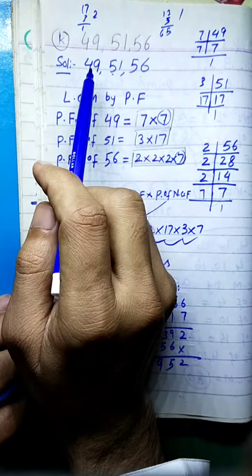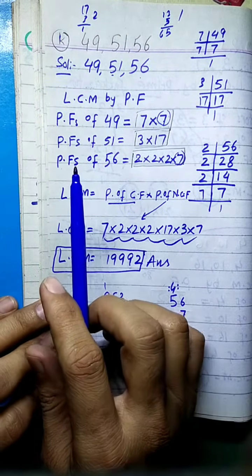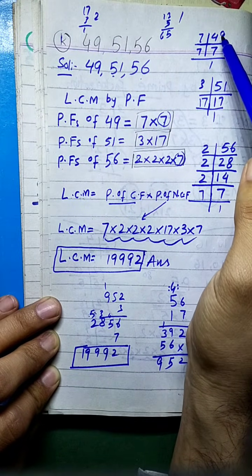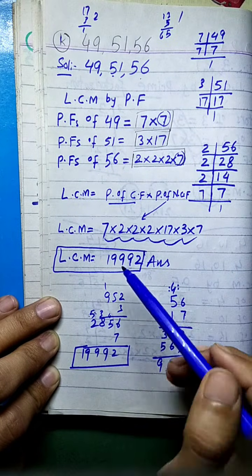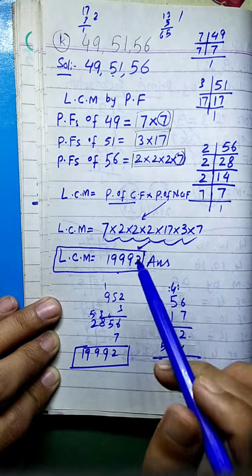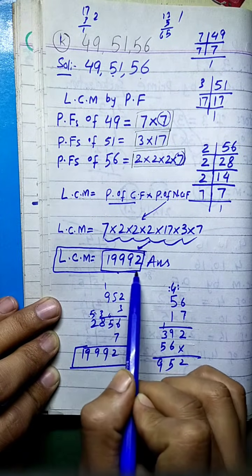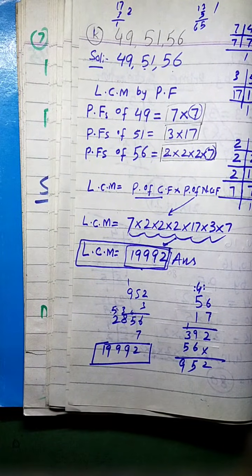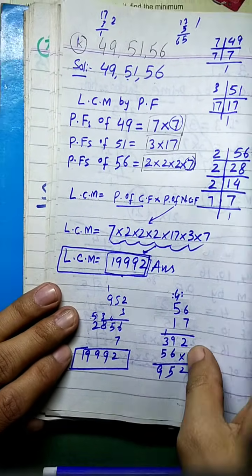Listing the multiples of 49, 51, and 56 to find the least common multiple. This confirms the LCM found by prime factorization. That completes the LCM by prime factorization method.